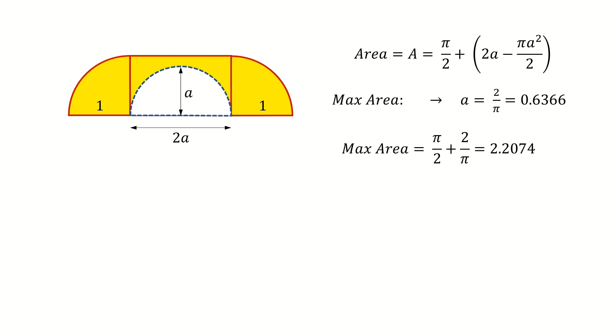In 1992, Gerwer improved this solution by using 18 carefully adjusted curves and reached a higher area of 2.2195. It's very similar to the shape we have found here, but the area is a bit larger.